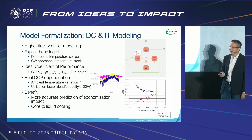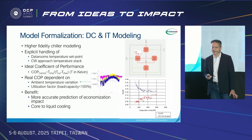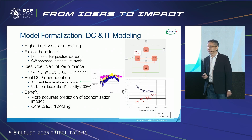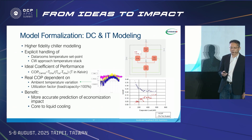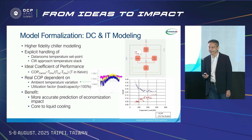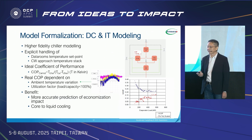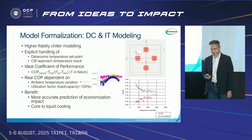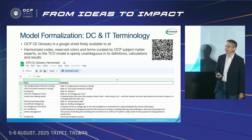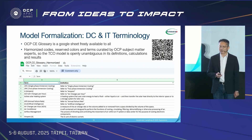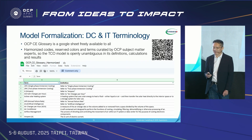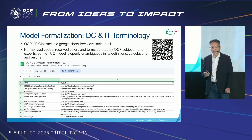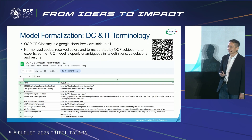It is recognized that among all four mechanical energy consumers — compressors, pumps, fans, and heat rejection units — compressor energy accounts for the largest ratio of overall mechanical energy. So it makes sense to have an elaborated chiller energy calculation with dynamic COP, which is subject to climate data and the data room set point temperatures. This QR code links to the OCP Cooling Environment Workgroup harmonized codes, reserved colors, and terms curated by OCP subject matter experts, so the TCO model is openly unambiguous in its definitions, calculations, and results.